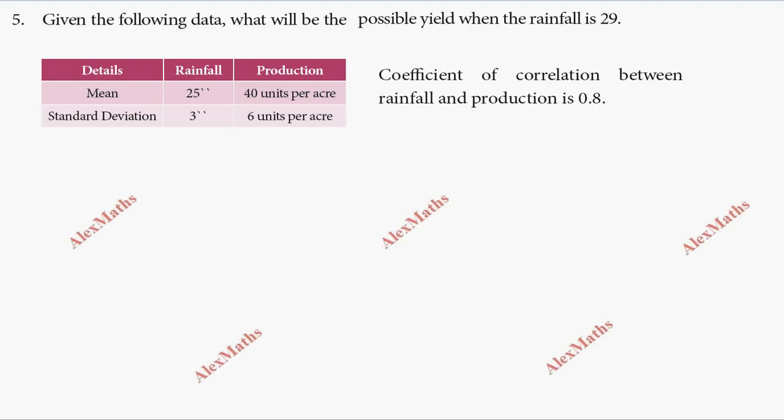So rainfall is x, production is y. Given the mean and standard deviation table and coefficient of correlation r equals 0.8. Mean x̅ equals 25 and ȳ equals 40. Standard deviation σx equals 3 and σy equals 6, and r equals 0.8.